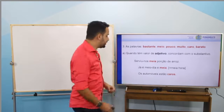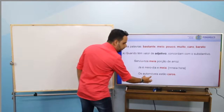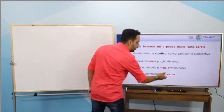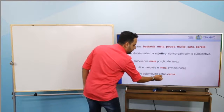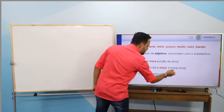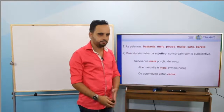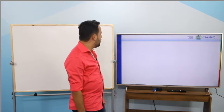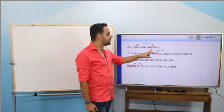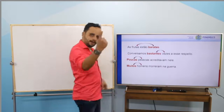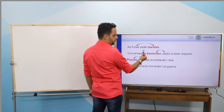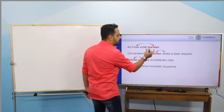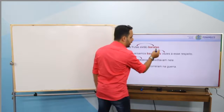Os automóveis estão caros. 'Caros' é um adjetivo que está concordando com 'automóveis'. Da perspectiva sintática, a palavra 'caros' vem após um verbo de ligação — o verbo estar — então tem função de predicativo do sujeito. As frutas estão baratas — 'baratas' concordando com 'frutas', também após o verbo estar. Frutas: plural feminino; baratas: plural feminino.